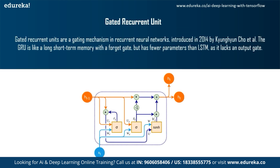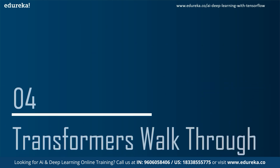The next type is the Gated Recurrent Unit, or GRU. GRU is a type of recurrent neural network that is in certain cases advantageous over LSTM — it uses less memory and is faster than LSTM. However, LSTMs are more accurate when using longer datasets. The trend driving all these improvements is clear: the model should be capable of remembering and taking in a longer input sequence.